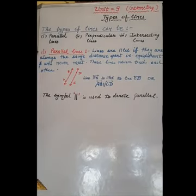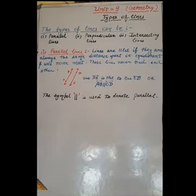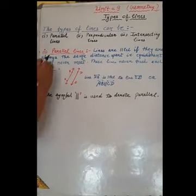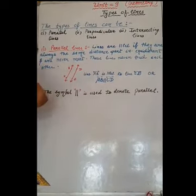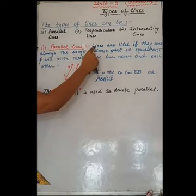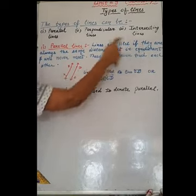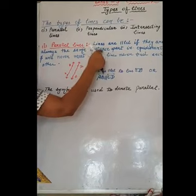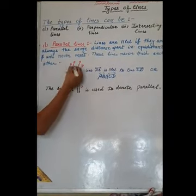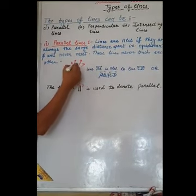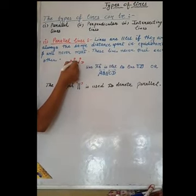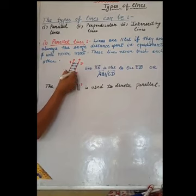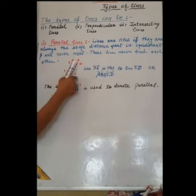Now, we will discuss about the types of lines. There are three types of lines: parallel lines, perpendicular lines and intersecting lines. First is parallel lines. Lines are parallel if they are always at the same distance apart. See, AB and CD are the two lines if they are always at the same distance apart. If their distance remains the same everywhere, then we call them parallel lines.